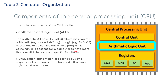It is possible for a computer to have more than one ALU to carry out specific functions. These are known as cores. So multiple cores in a computer basically means it's got multiple arithmetic logic units. A quad-core computer has four ALUs, meaning you can do a lot more in terms of multitasking. Multiplication and division are carried out by a sequence of addition, subtraction, and left or right logical shift operations, which we'll come to later when we talk about binary in this chapter.